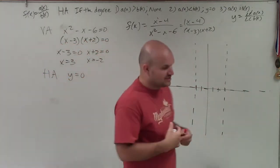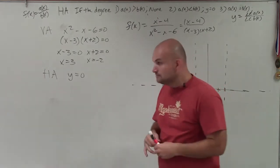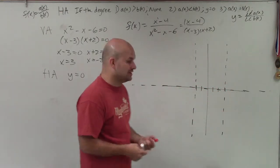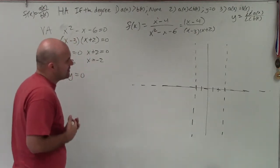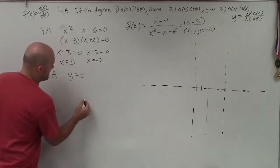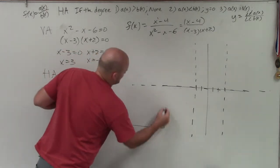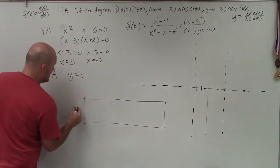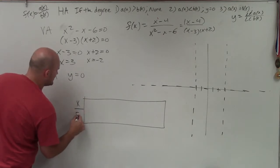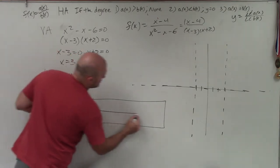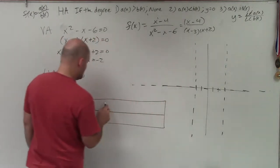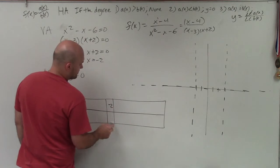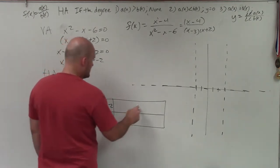Now the last thing I want to do is to identify what this graph looks like. I would highly recommend using graphing technology, your graphing calculator or a computer. But basically, what we're going to be looking into doing is choosing two values to the left and to the right of each horizontal asymptote.